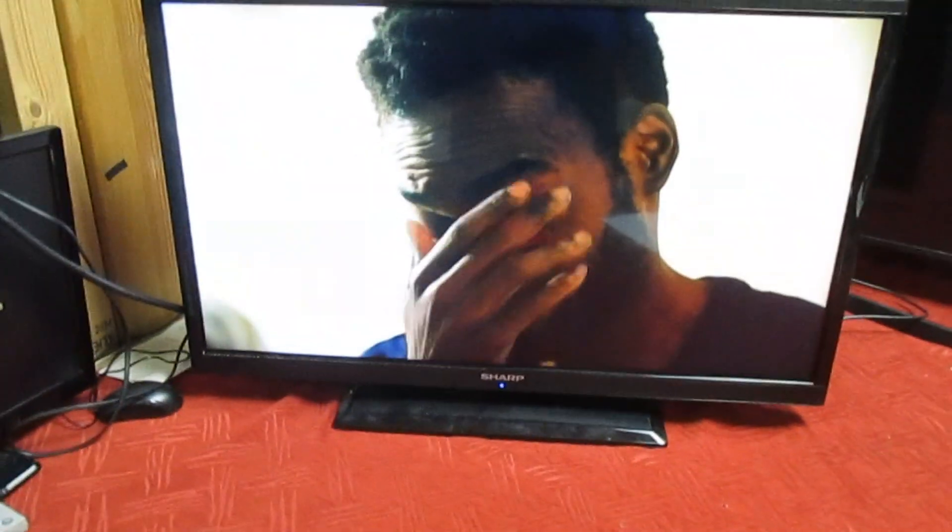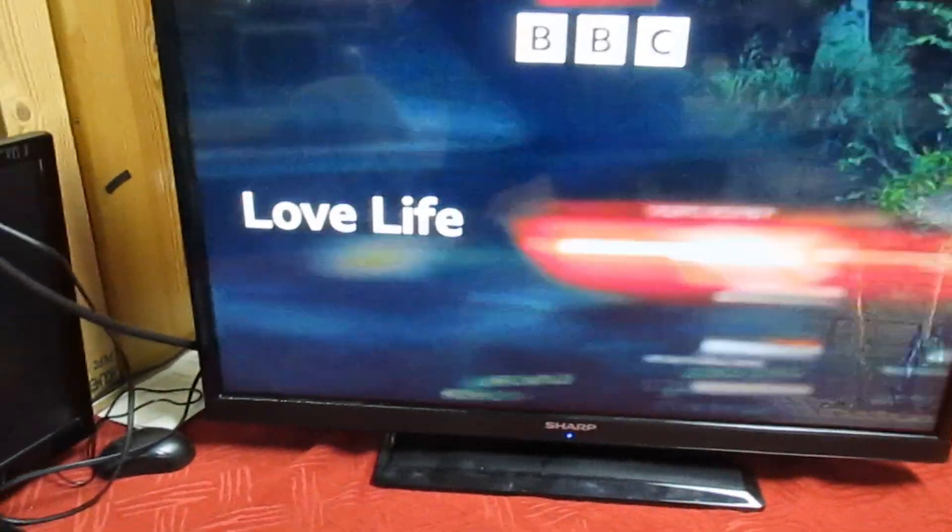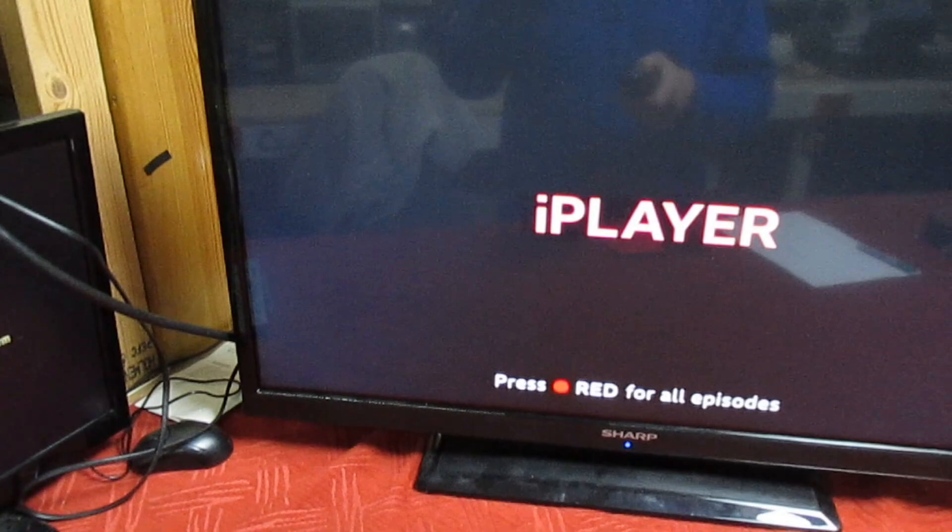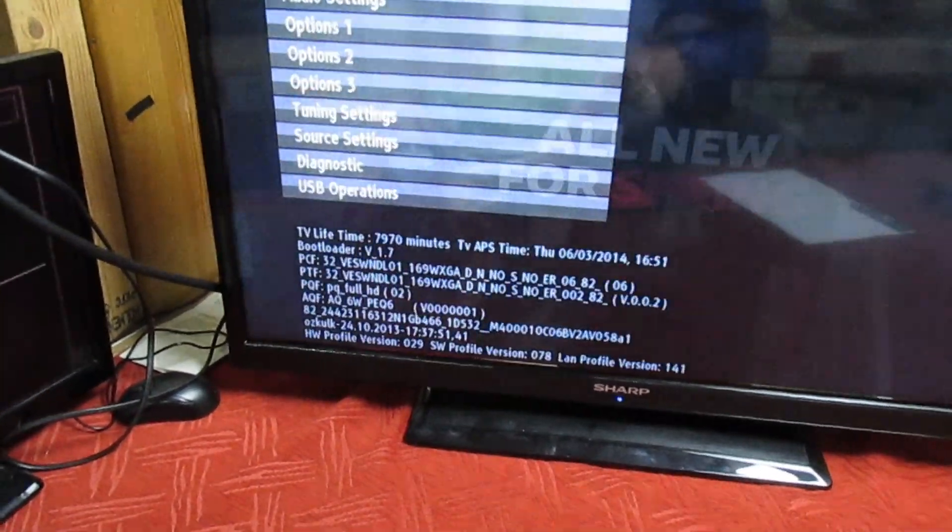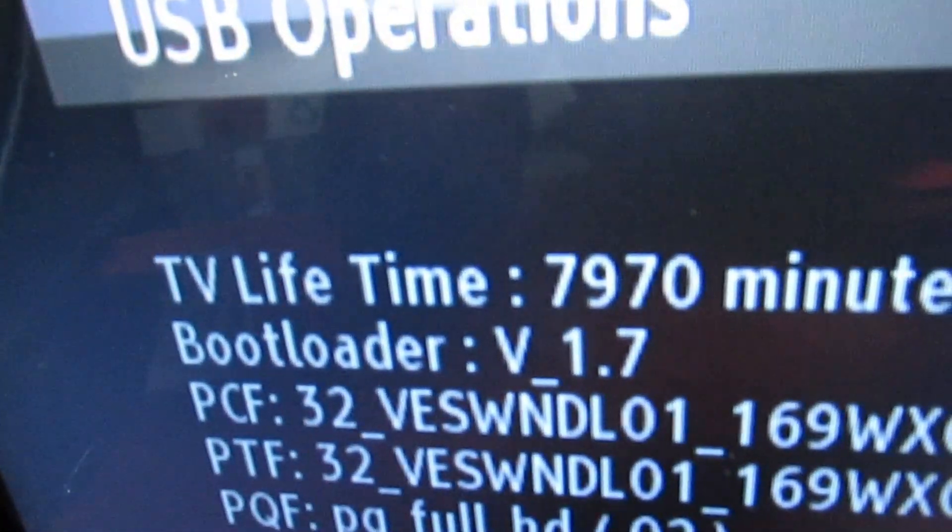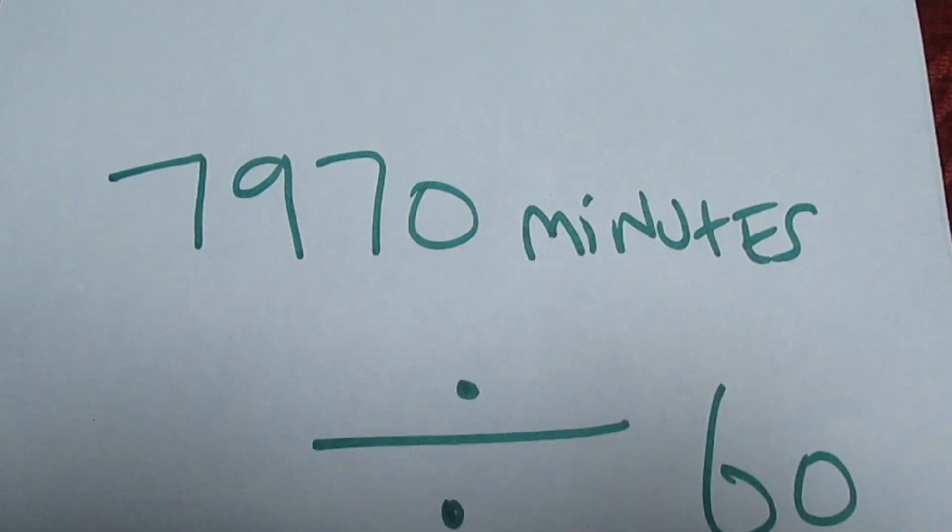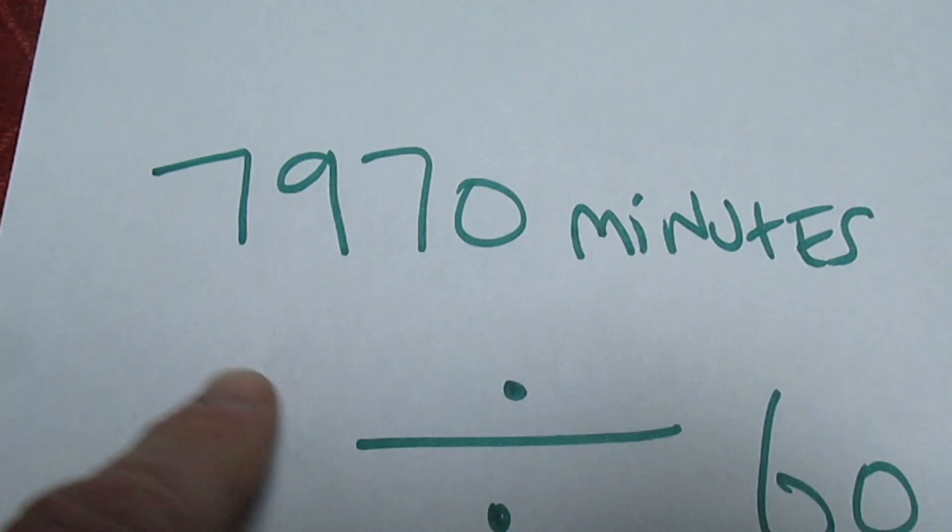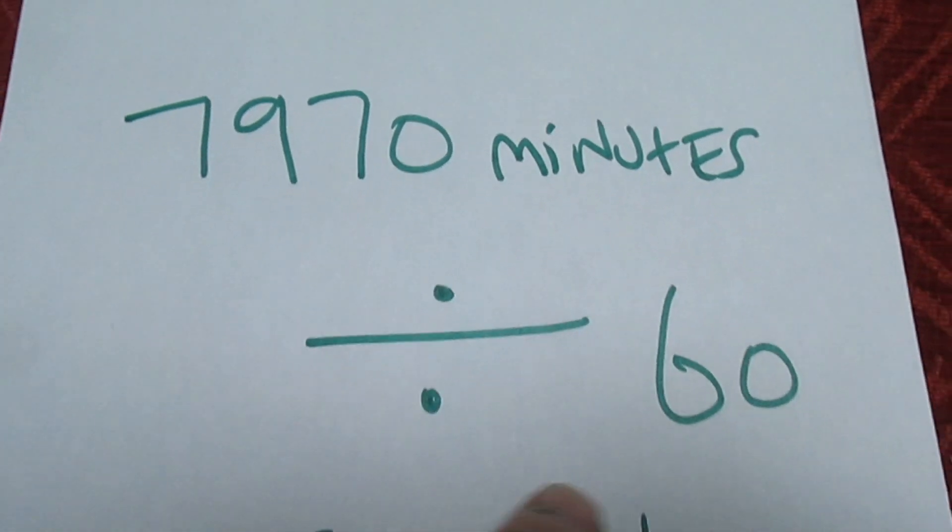Actually, before we close this video, let me just show you what's alarming about this TV: the runtime. So we put it into the service mode, and if we look there, TV lifetime 7970 minutes. Right, so take a quick look at this. 7970 minutes, you divide that by 60, that gives you hours.